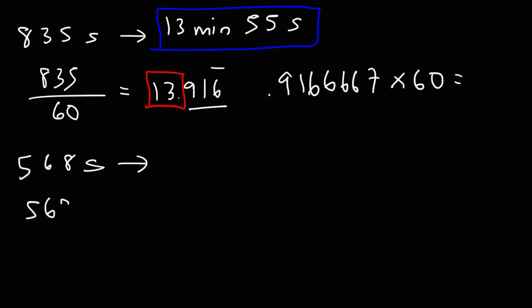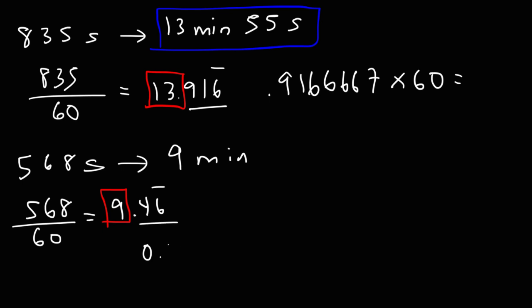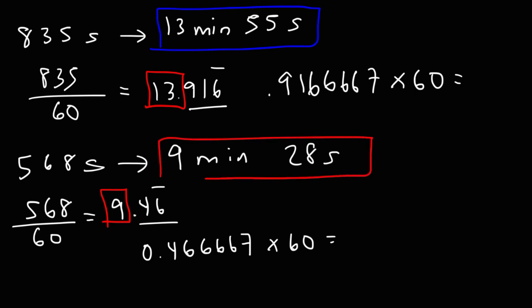For the next one, take 568 divided by 60, which gives 9.46 repeating. Take the 9 part — that's our minutes. What's left over, multiplied by 60, gives 28. So we get 9 minutes and 28 seconds. To check: 9 times 60 is 540, add 28, which gives 568. So now you know how to convert from seconds to minutes and seconds. That's it for this video — thanks for watching, and don't forget to subscribe.